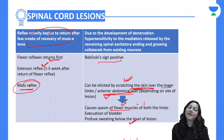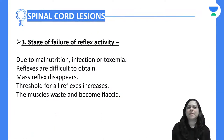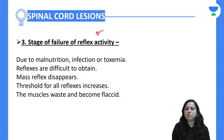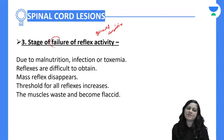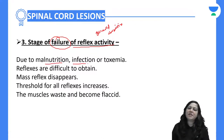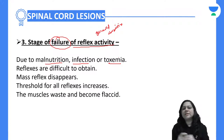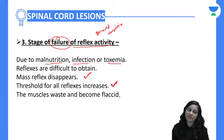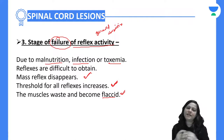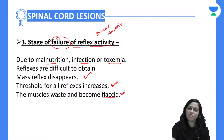When reflex activities are regained in complete transaction, that completes the stage of reflex activity. If the person's general condition is poor and deteriorating due to malnutrition, infection, or toxemia, the stage of reflex failure will occur. All the reflexes that started recovering become difficult to obtain, mass reflex disappears, thresholds for all reflexes increase, and muscles become wasted and flaccid.